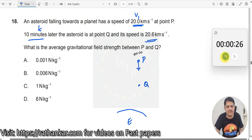What is the average field strength at point P and point Q? So which means now this is 20 km per second. This is 20.6 km per second and the time taken for it is nothing but 10 minutes. Very easy question, right? So this is your V1. This is your V2.